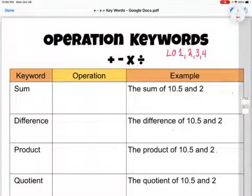two, three, and four. Here we have a table with the keyword (sum, difference, product, and quotient), the operation, and an example. If you want to jot this down in your notebook, now is a good time to pause this video and write this table.